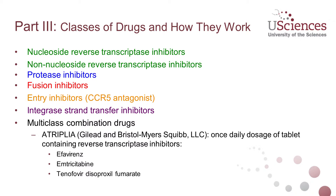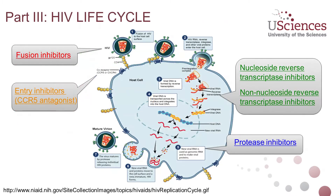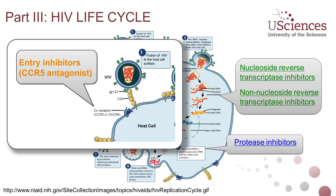These drugs are described according to what they target in the HIV life cycle. We have drugs that inhibit the reverse transcriptase enzyme, drugs that inhibit protease, and drugs that inhibit both entry and fusion. Looking at the slide, entry inhibitors antagonize the co-receptor CCR5, getting in the way so that HIV is not able to properly enter cells via attachment to the CCR5 co-receptor.